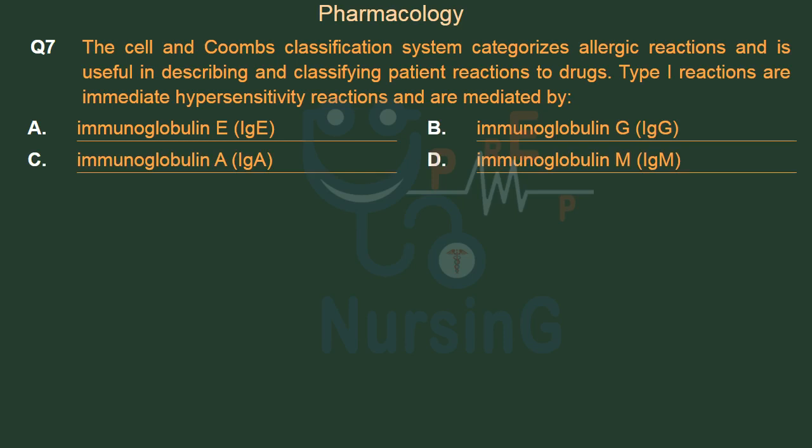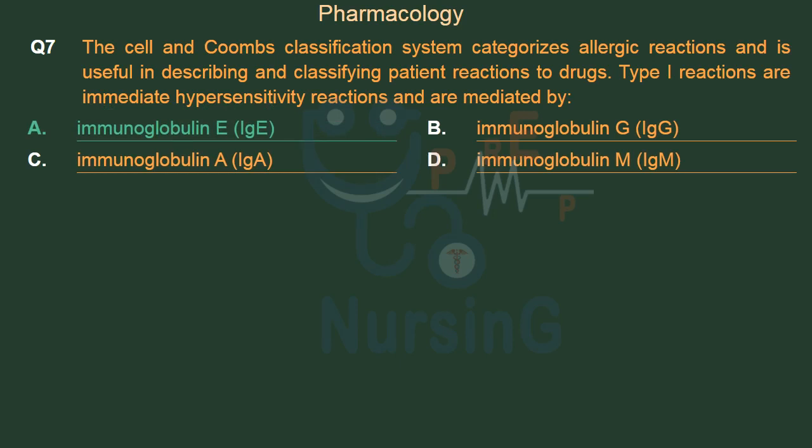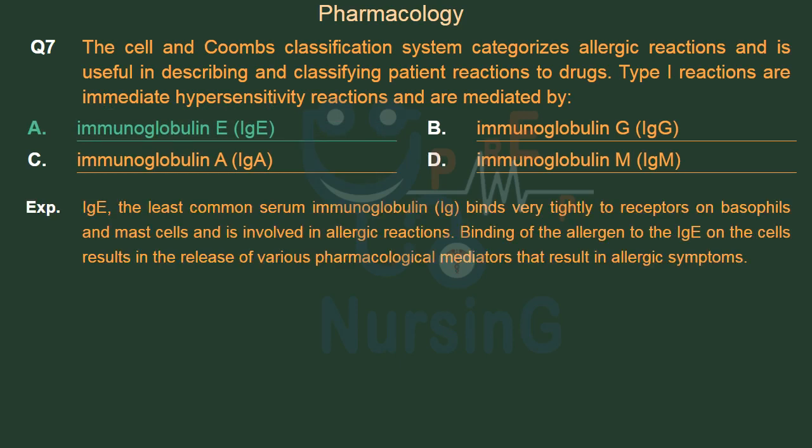The right answer is Option A: Immunoglobulin E (IgE). IgE, the least common serum immunoglobulin, binds very tightly to receptors on basophils and mast cells and is involved in allergic reactions. Binding of the allergen to the IgE on the cells results in the release of various pharmacological mediators that result in allergic symptoms.